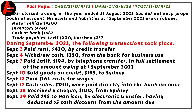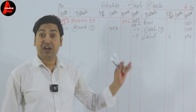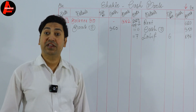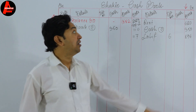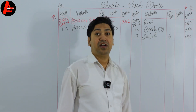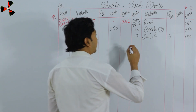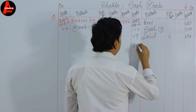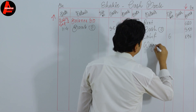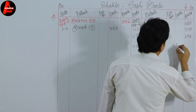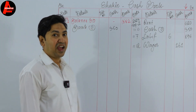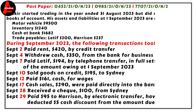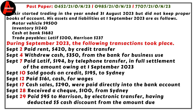September 12: paid 161 dollars cash for wages. Wages is an expense, so it comes on the credit side. We paid in cash, so cash balance decreases and we write it on the credit side. We write date September 12, wages, and 161 dollars on the cash column.